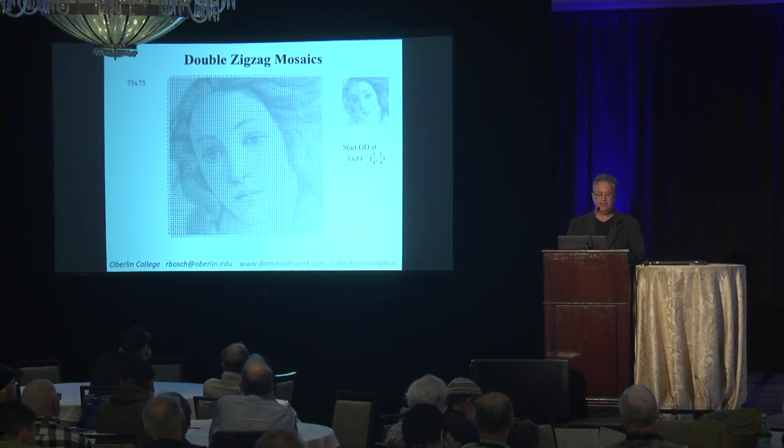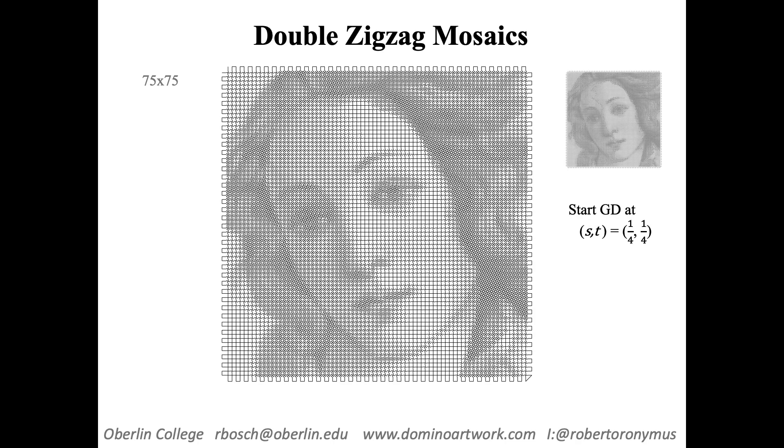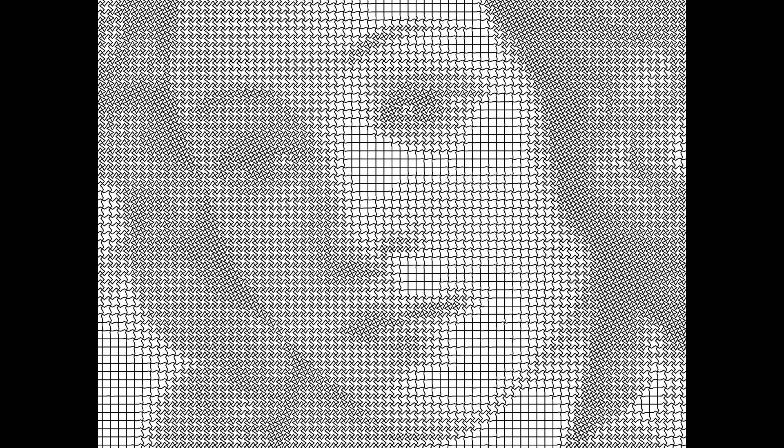Here's a double zigzag mosaic — again Botticelli's Venus — starting at point (one-fourth, one-fourth). If you keep s and t at the same value, that persists; you can prove this quite easily by looking at the gradient. One thing I like about these is that if you zoom in, you see things that look like tessellations — or more accurately, tessellations that morph into other ones. I think of this as parquet deformation.